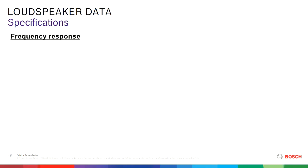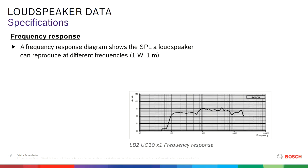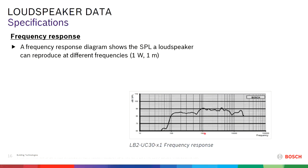Frequency response. In the frequency response diagram shown in the datasheet, it shows you how well a loudspeaker can reproduce all frequencies and at what level at 1 watt, 1 meter. So at 1,000 hertz — at 1 kilohertz — this loudspeaker will produce 90 dB at 1 watt, 1 meter. You look at the frequency 1,000 hertz, and at 1 watt 1 meter this loudspeaker will produce 90 dB.